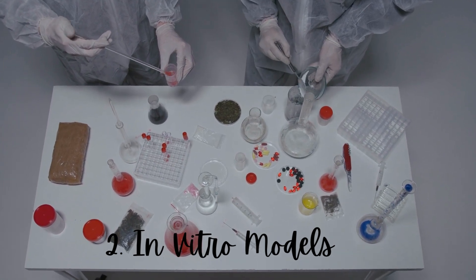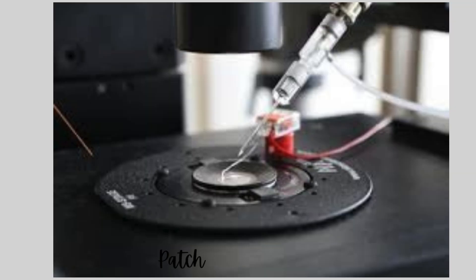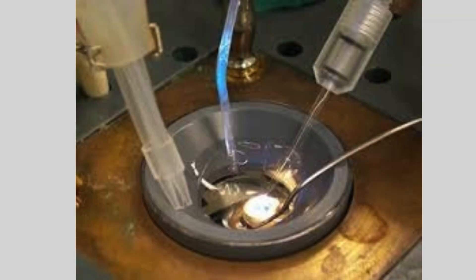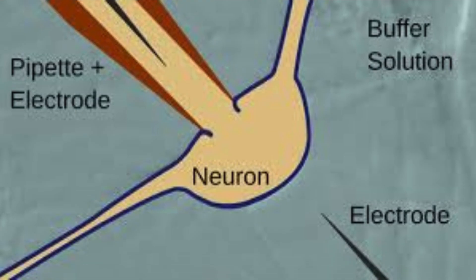A. Patch clamp technique: Purpose - this technique is used to study the effects of drugs on ion channels in neuronal cells. Method - a micropipette is used to isolate a small section of the cell membrane. The electrical current passing through ion channels is recorded, allowing researchers to see how a drug affects neuronal excitability and the molecular action of CNS drugs that influence neurotransmission, such as antiepileptics or muscle relaxants.